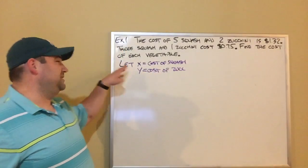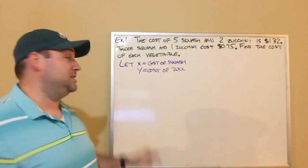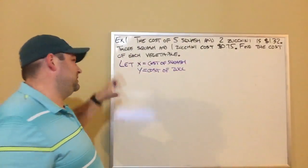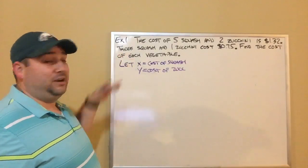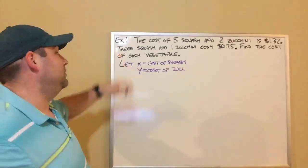So notice I wrote this let. That's just kind of how you do things when you're deciding what a variable is. You say, I'm letting X equal this and Y equal this. It's just kind of how you do it. So now we got our variables X and Y. Now we need to come up with equations. So we got to look at the information we were given.